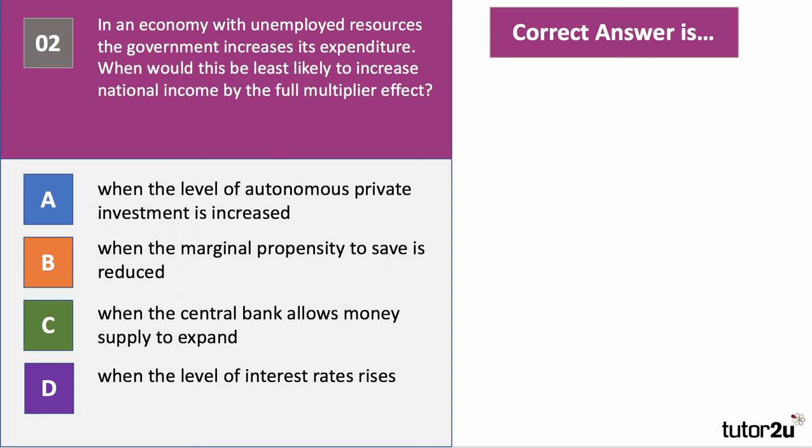Question two: in an economy with unemployed resources, the government increases spending. When would this be least likely to increase national income by the full multiplier effect? Have a go at this question, press pause, and press play when you're ready to go through the answer.